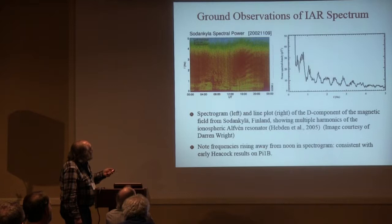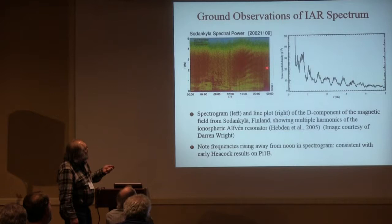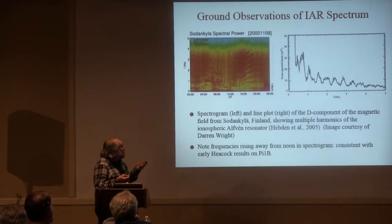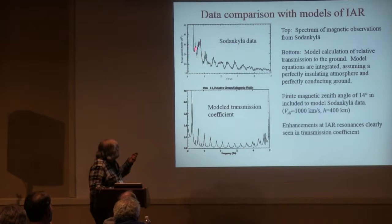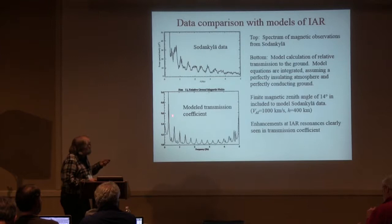Here's another example from ground magnetometer data from the Lester group, and this is one of the best ones I've seen so far. They've seen all sorts of harmonics of this resonance. This is again from Finland, so UT is within a few hours of MLT. As you go away from noon, these frequencies go up. That's consistent with the fact that the frequency of these waves scales inversely with the scale height of the ionosphere, so you'd have higher frequencies at night than during the day. We did some modeling of this by calculating the transmission coefficient of waves through the ionosphere to the ground, and without much twiddling of parameters we got pretty decent agreement even to the frequencies.